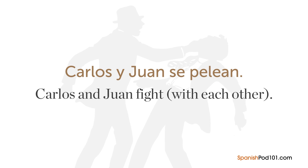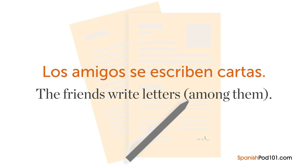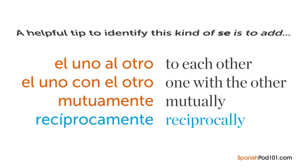For example: 'Carlos y Juan se pelean' meaning 'Carlos and Juan fight with each other' — SE acts as the direct object because the thing they are fighting is themselves. Another example: 'Los amigos se escriben cartas' literally meaning 'The friends write letters among them' — here the direct object is 'cartas' meaning letters, and SE acts as the indirect object as it's to whom the action goes. A helpful tip: add 'el uno al otro' meaning 'to each other,' 'mutuamente' meaning mutually, or 'recíprocamente' meaning reciprocally to the end of the sentence. If the meaning doesn't change, use reciprocal SE.